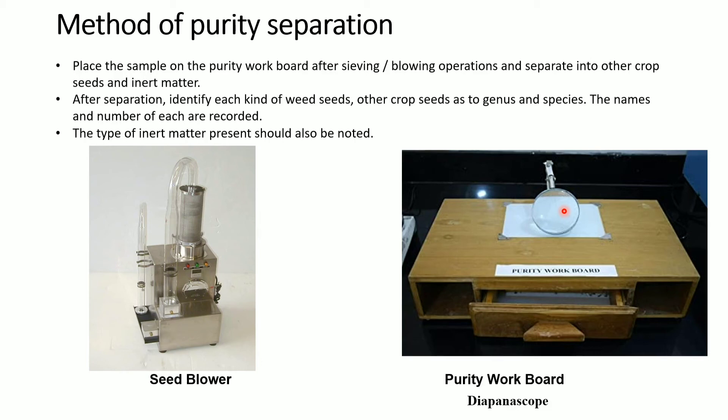Some weed seeds cannot be segregated by the seed blower based on weight alone. In such cases, the purity workboard is used to visually separate seeds by morphological characters - distinguishing weed seeds, other crop seeds, and seeds from different genera or distinguishable varieties within the mixture.